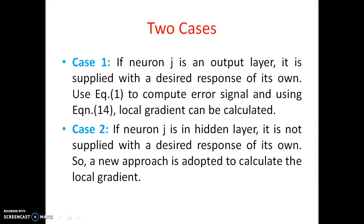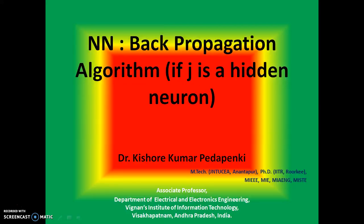This is the case 2 out of 2 cases what we have discussed in the last video. This video is for backpropagation algorithm if J is in a hidden neuron or J is in a hidden layer.